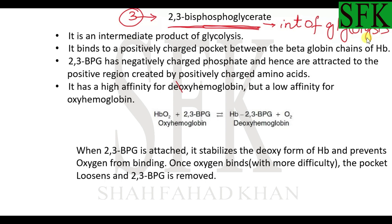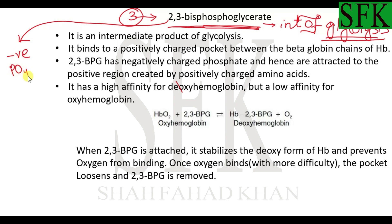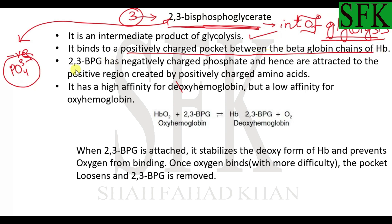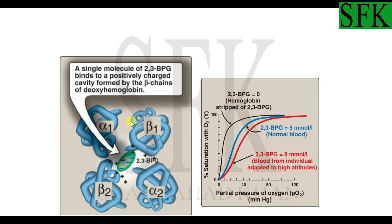2,3-BPG is an intermediate metabolic product of glycolysis. It contains negatively charged phosphate groups, and it is basically due to these phosphate groups that 2,3-BPG binds to the hemoglobin structure. It binds to the positively charged pocket between the beta globin chains of hemoglobin. I'll show you a diagram taken from your Lippincott textbook.